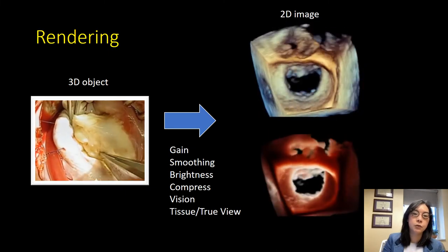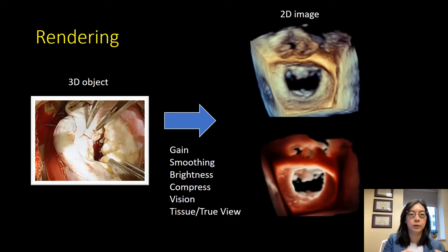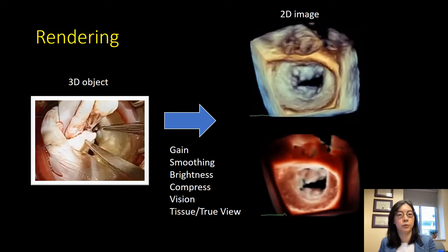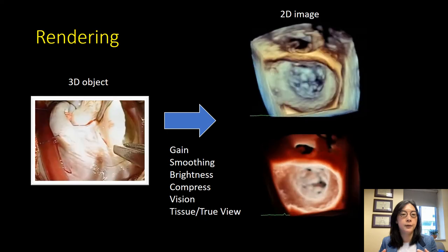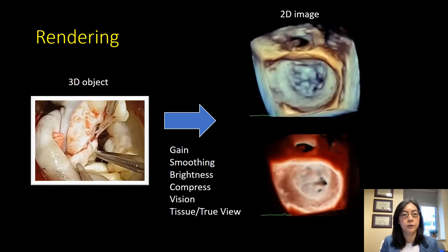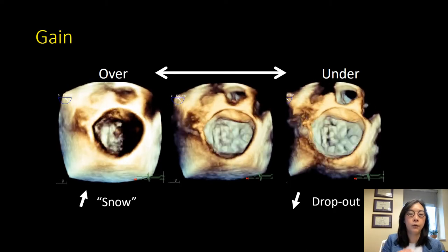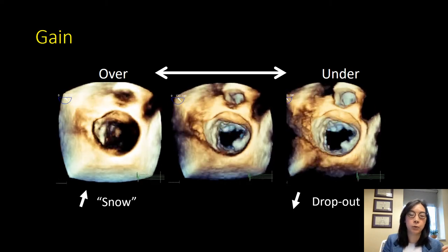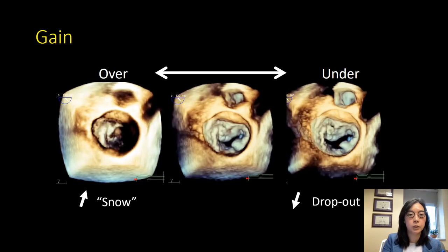Once you've cropped your data set and can see the structure of interest, you have to render it. What does rendering mean? You're taking a 3D structure and creating a 3D data set, but most ways we display 3D data are on a 2D video screen, so rendering makes this 2D image look more 3D-like. The main three things to adjust are gain, smoothing, and brightness. If you over-gain you end up with a lot of noise or snow on your image. If you under-gain you'll have dropout of tissue and won't know if there's truly a perforation, a gap, a cleft, or if it's just dropout from too little gain. Be careful not to do too much or too little.